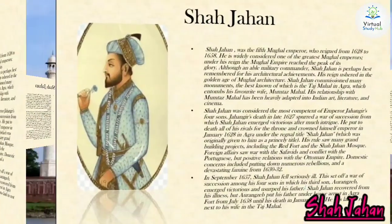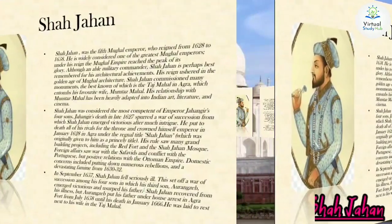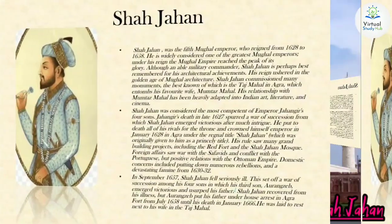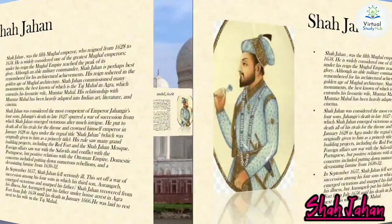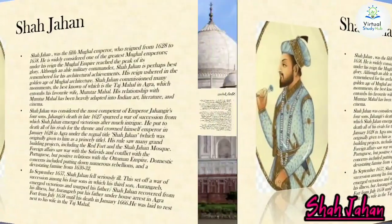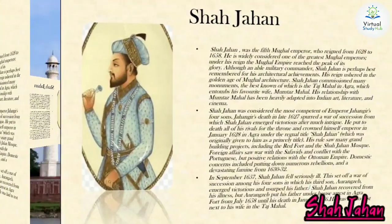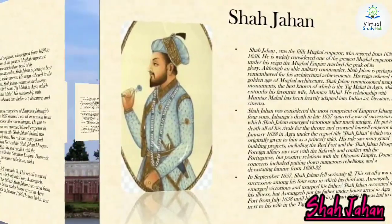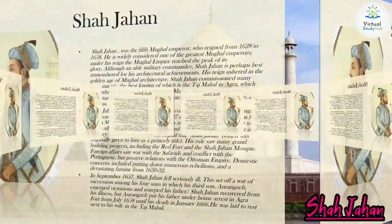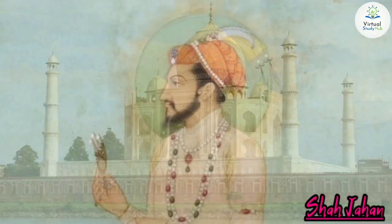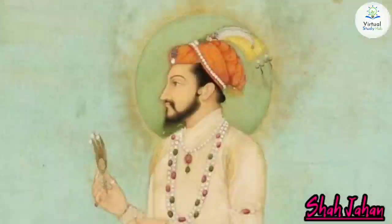The Taj Mahal entombs his favorite wife Mumtaz Mahal, and Shah Jahan himself. Their relationship has been heavily depicted in Indian art, literature, and cinema. Shah Jahan was the most favored of Emperor Jahangir's four sons. Jahangir's death in late 1627 spurred a war of succession from which Shah Jahan emerged victorious. He put to death all of his rivals for the throne and crowned himself Emperor in January 1628 in Agra. His rule saw many grand building projects including the Red Fort and the Shah Jahan Mosque.